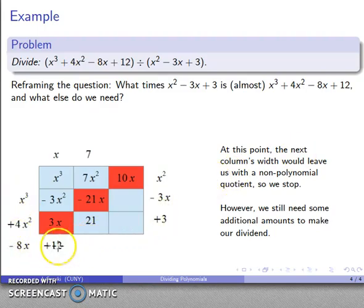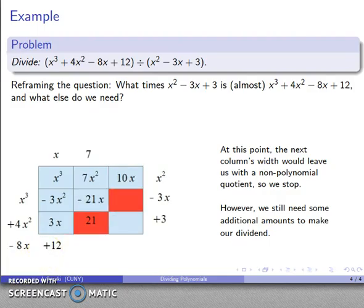But we're not quite done because we don't quite get the area that we want. This area here is -8x, but we have to get this +12 as well. This 12 had to have come from the terms along these last two diagonals. This is 21 and this has to be -9.